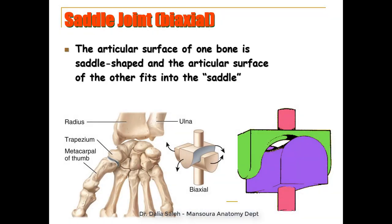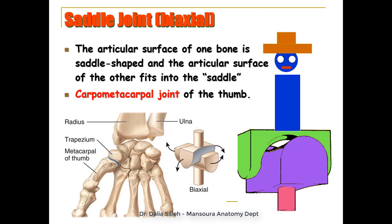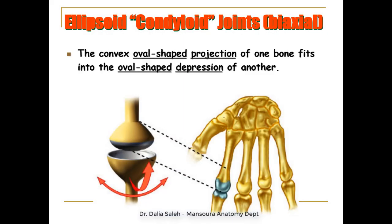In saddle joints, the articular surface of one bone is saddle-shaped and the articular surface of the other bone fits into this saddle. For example, the carpometacarpal joint of the thumb — it looks like a person sitting on a saddle. Movements allowed are around two axes: rocking from side to side or forward and backward. In ellipsoid joints, a convex oval-shaped projection of one bone fits into an oval-shaped depression of another bone. For example, the metacarpophalangeal joints, allowing flexion, extension, adduction, and abduction of the fingers.